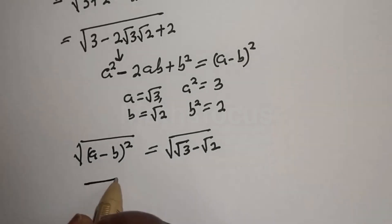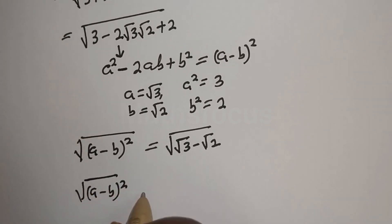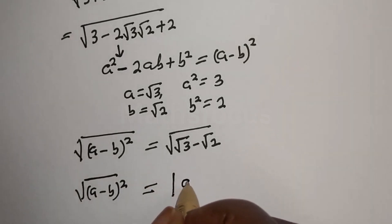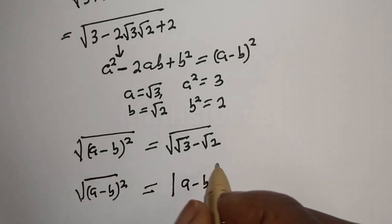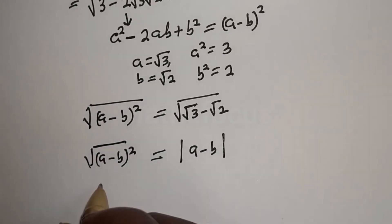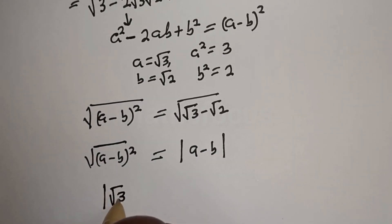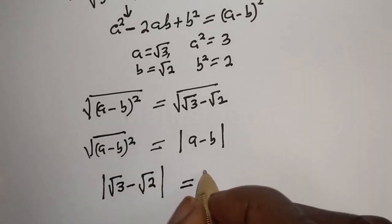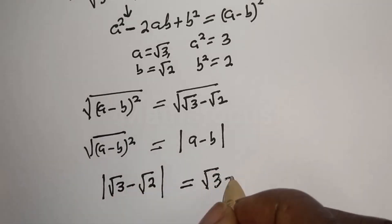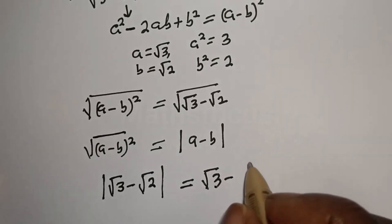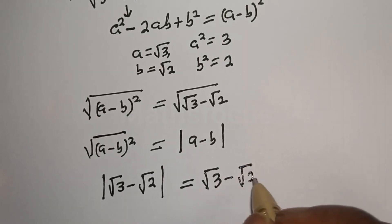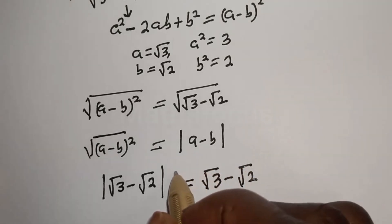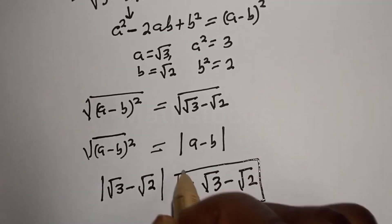Now, square root of (a minus b) squared equals the absolute value of (a minus b). Applying this identity, we get the absolute value of (root 3 minus root 2). Since root 3 is greater than root 2, the answer is positive, giving us root 3 minus root 2 as the final answer.